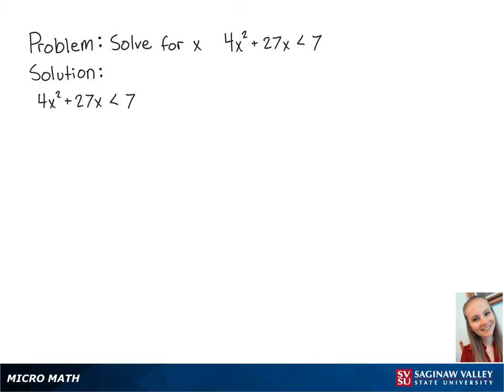For this problem, we're going to solve for x in the inequality 4x squared plus 27x is less than 7. First, we want to get the right side equal to 0. So we're going to subtract 7 from both sides so that we have 4x squared plus 27x minus 7 is less than 0. Now we can factor the left side of the inequality.